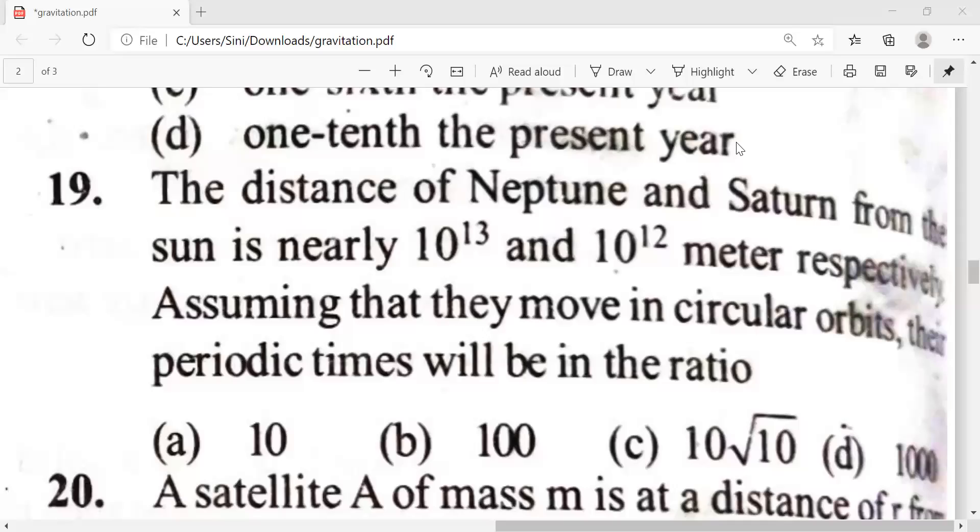The distance of Neptune and Saturn from the sun is nearly 10 power 13 and 10 power 12 meter respectively. The radius are given. Assuming that they move in circular orbits, their periodic times will be in the ratio.